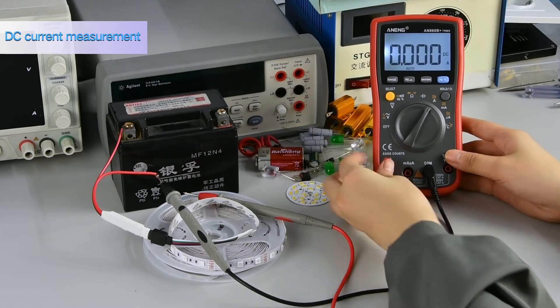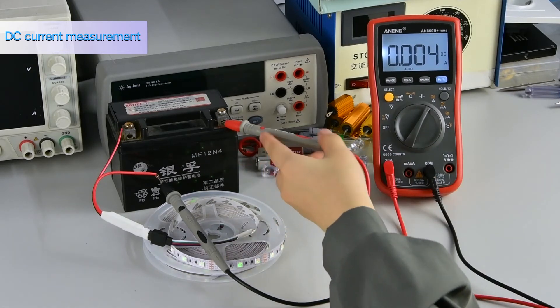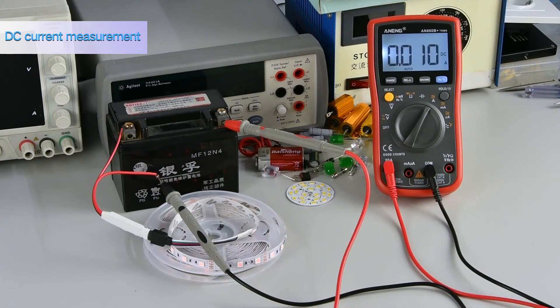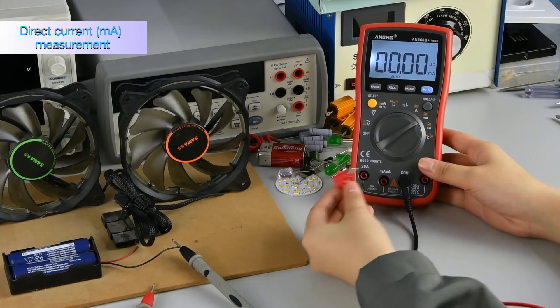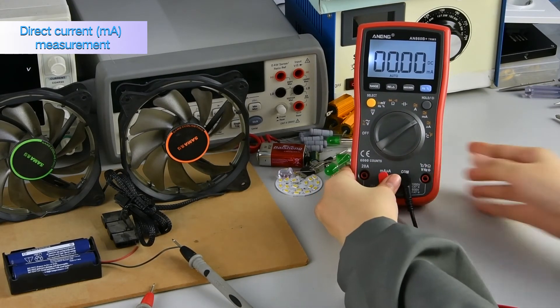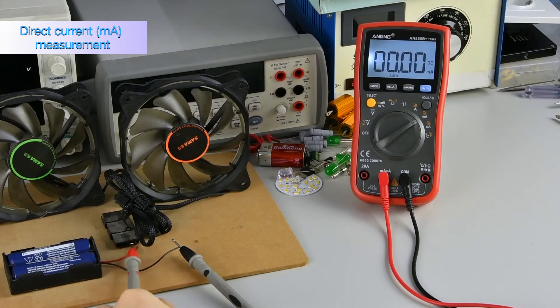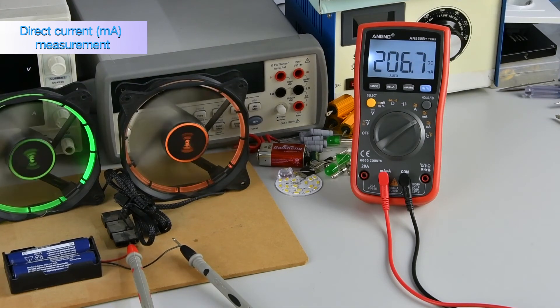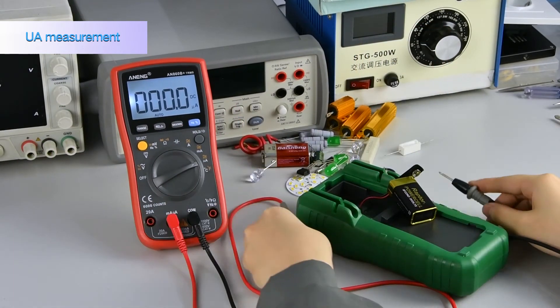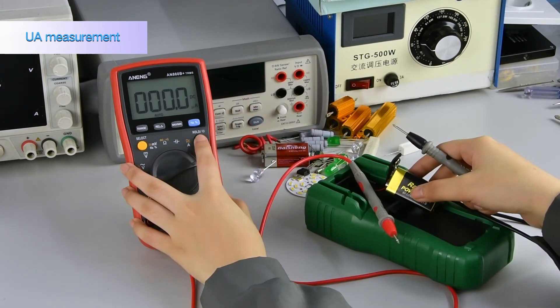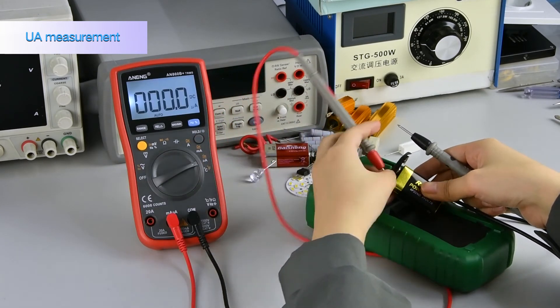DC current: the current at work can be measured by placing the watch pen in the corresponding position. Direct current mark measurement. Measurement of micro DC current: measure the current value of the multimeter when it is in operation.